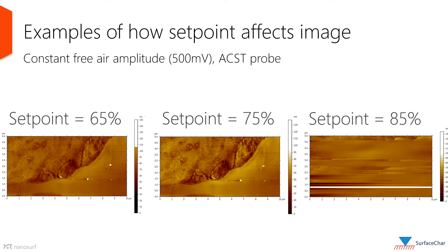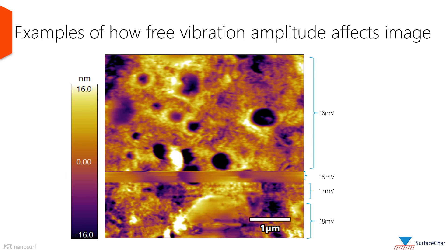Shown here are examples of how the setpoint affects image quality. The higher the percentage, the lower the setpoint. The setpoint on the right is clearly too low — the entire image is smeared due to insufficient interaction of the tip with the surface. Setpoints on the left and the middle are both acceptable. Too high a setpoint can cause the cantilever to rebound off the surface and cause ringing noise in the image. Insufficient free amplitude, less than 16 mV in this case, also causes smearing due to lack of sufficient interaction between the surface and the tip.